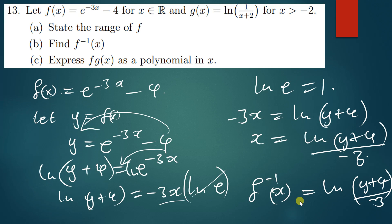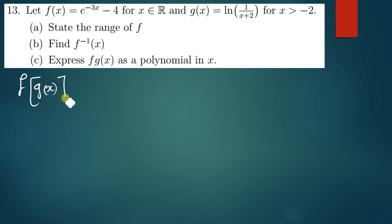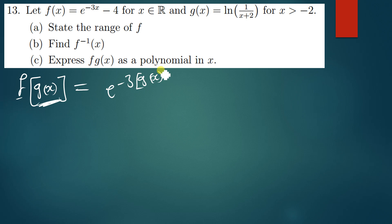We move on to the last question, which is asking us to express f(g(x)) as a polynomial — in other words, find the composite function by combining f and g of x. So f of g of x means in f, wherever there is x, we put g of x. Our f is e to the power negative 3 times x, so we replace x with g of x and subtract 4. We know g of x has been given as ln(1 over x plus 2).